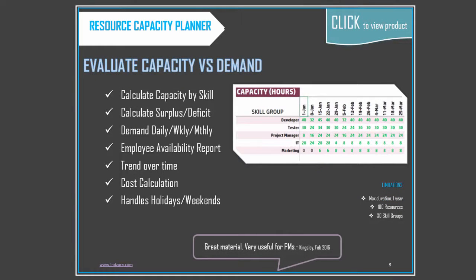Using the Resource Capacity Planner, you can evaluate your team's resource capacity by skill and compare it against demand to determine whether you have surplus or deficit in capacity. You can take into account holidays, vacations, and overtime to calculate the true capacity of your team and plan smartly. It also includes an employee report that summarizes the availability of each employee.